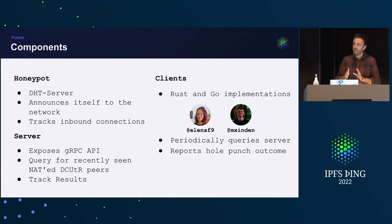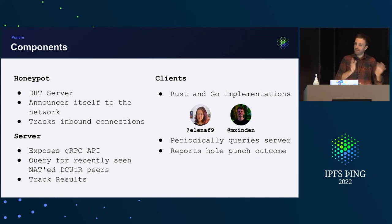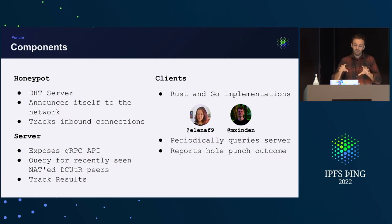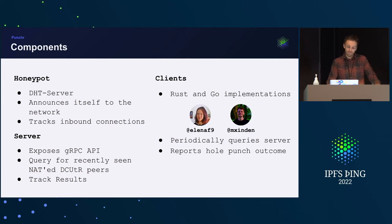When the honeypot detects an inbound connection it saves it to a database. The server component exposes a gRPC API with query and track endpoints — so you can query the server for peers detected behind NATs, and after performing a hole punch, track the results back. The clients — one in Rust, one in Go — connect to the server and request peers to hole punch. My client is currently running in my home network, and if the hole punch is successful or not, it reports back the outcome.